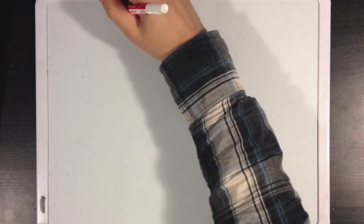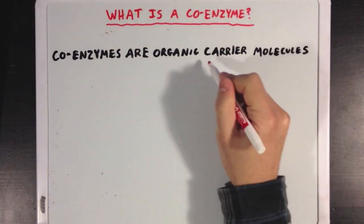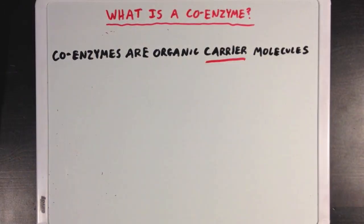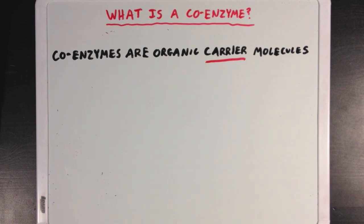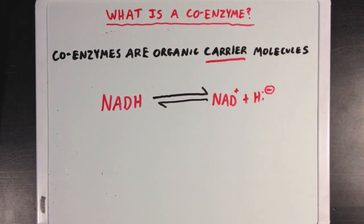So first we'll talk about what a coenzyme is. Coenzymes are organic carrier molecules. What I mean by organic is that they're primarily carbon-based molecules. And by carrier, I mean that coenzymes hold on to certain things for an enzyme to make the catalysis run a little more smoothly. A great example of a coenzyme is NADH, which acts as an electron carrier.